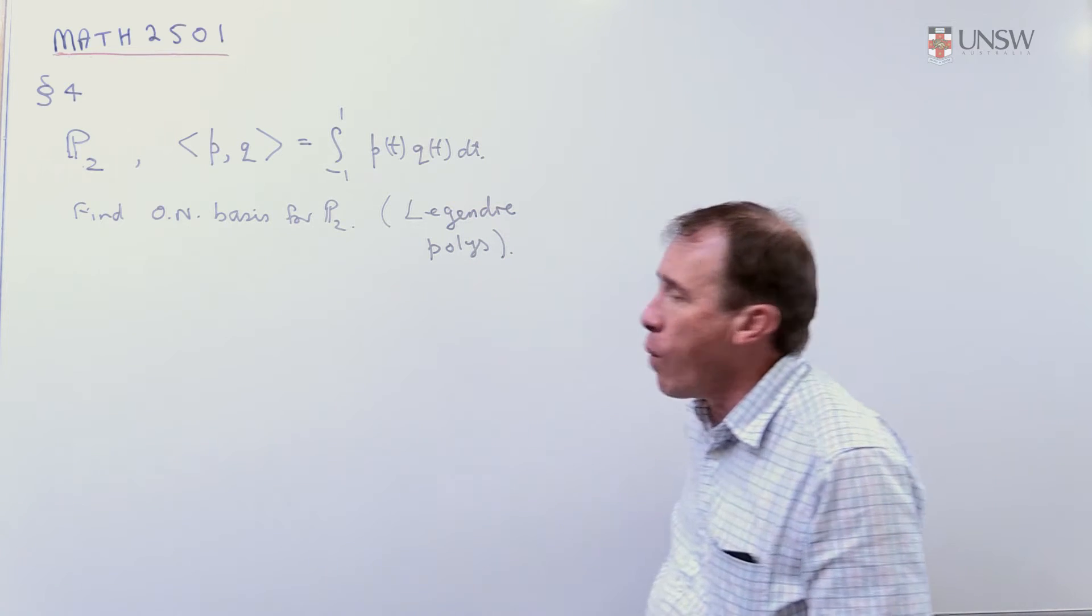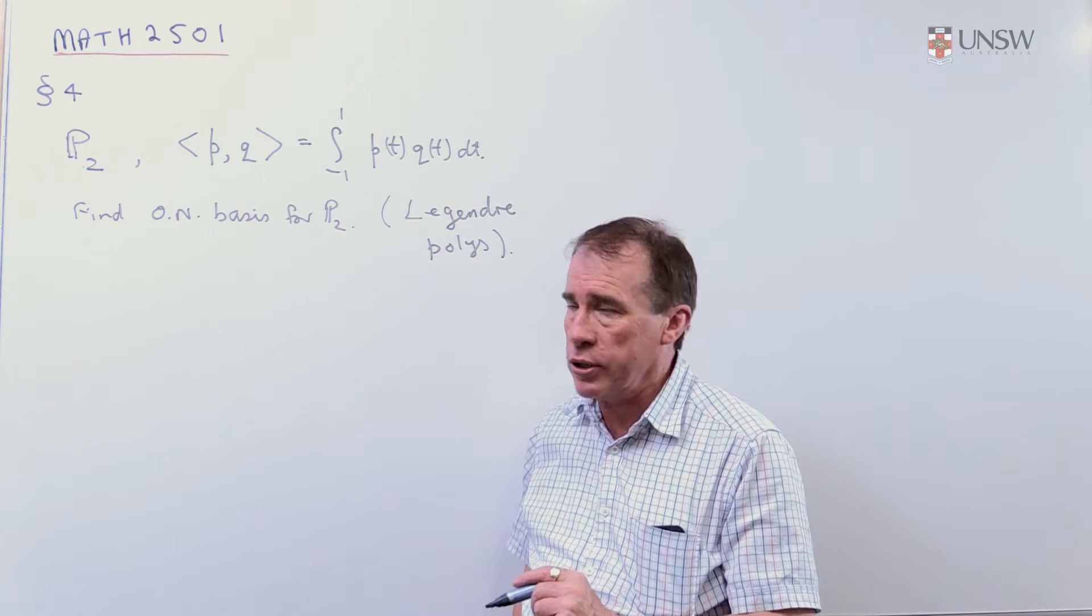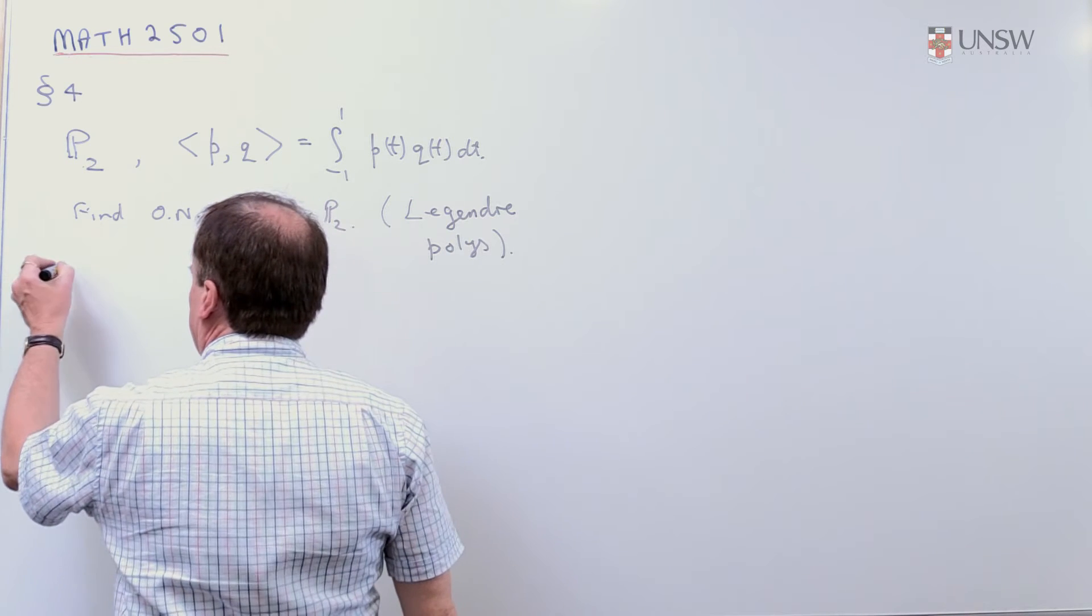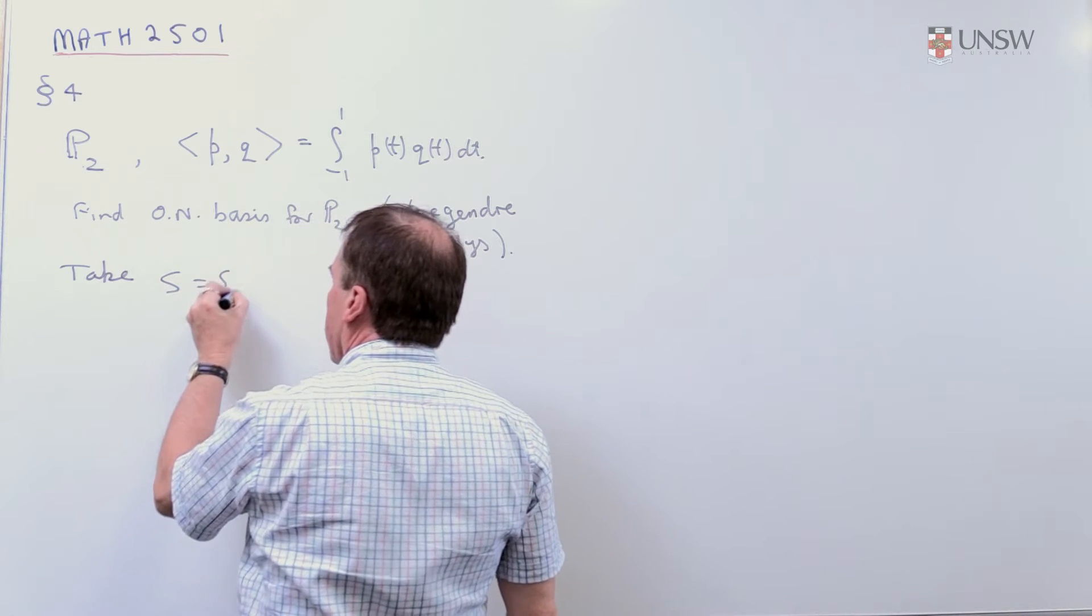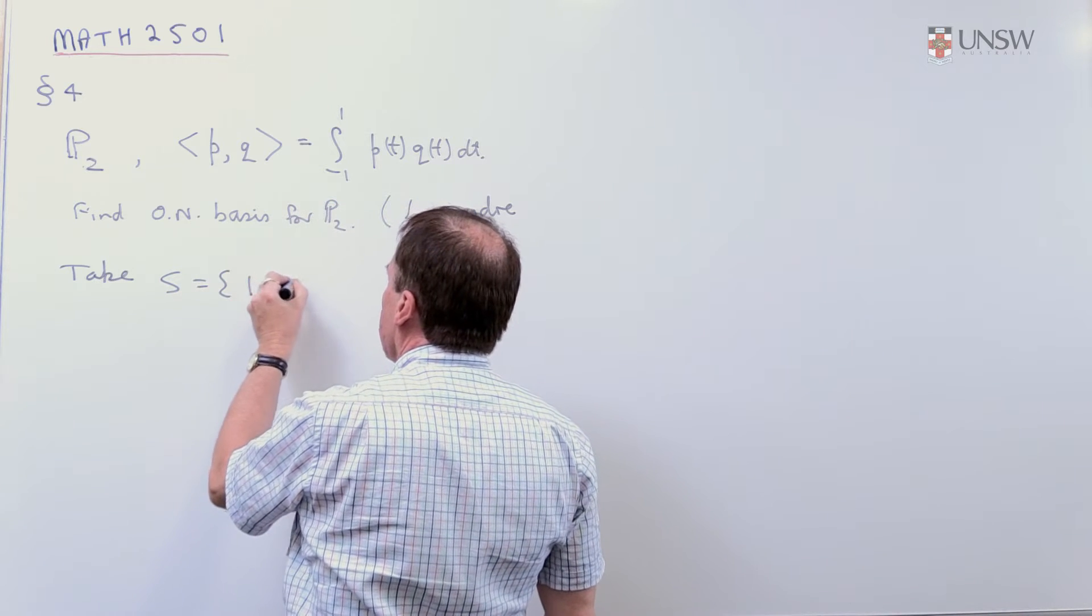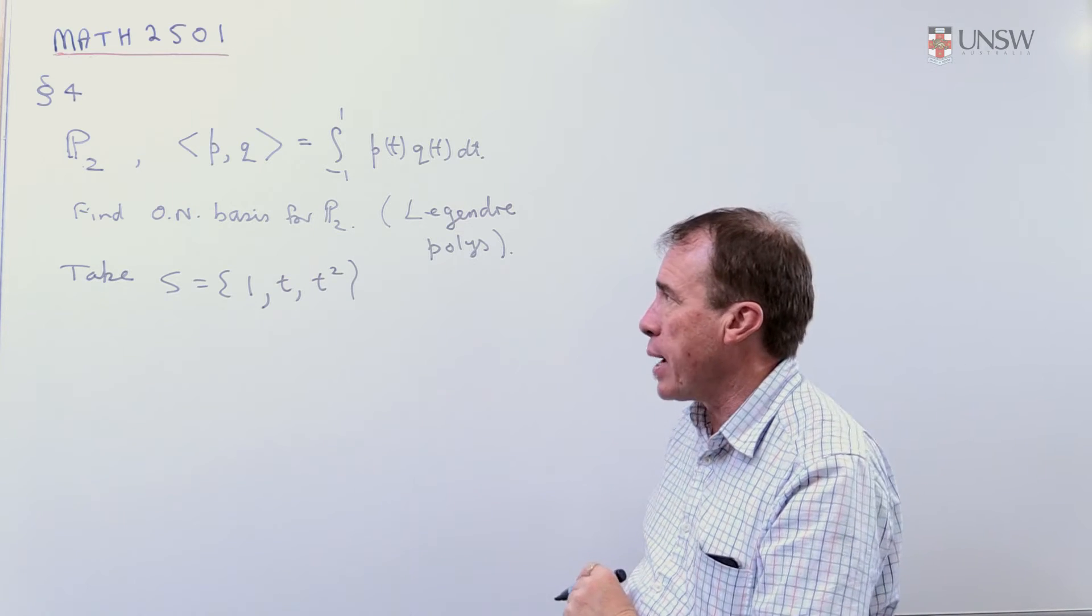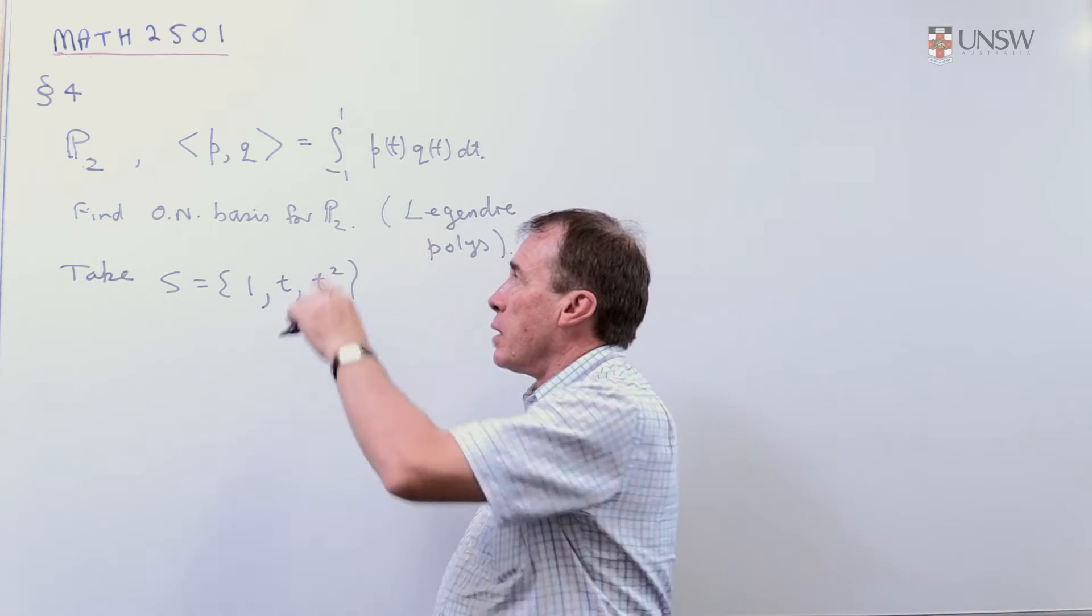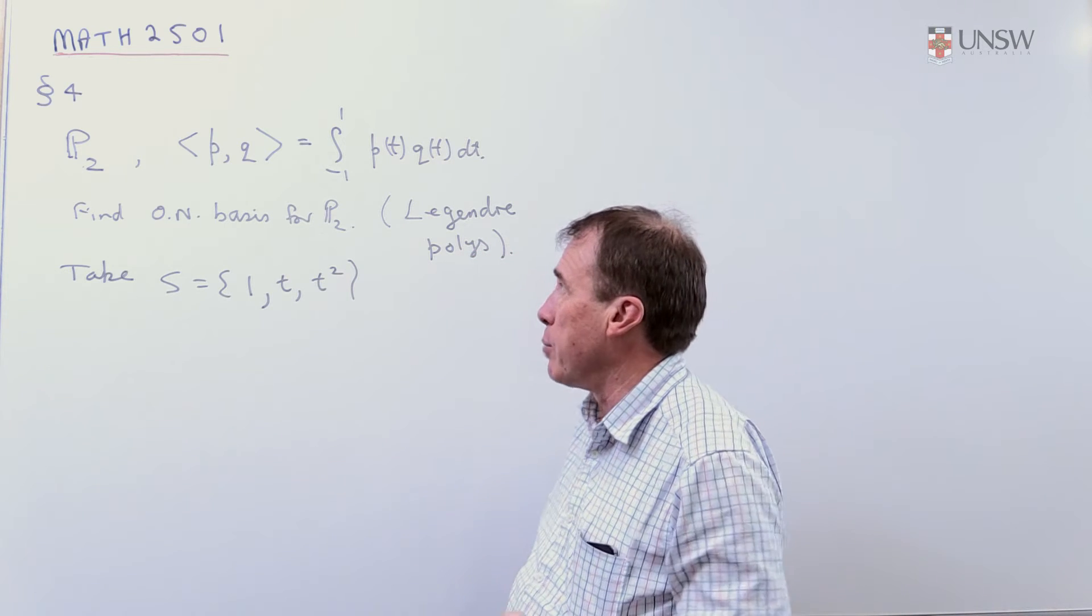Now, how do we build an orthonormal basis for this? Well, we start off with our standard basis, which is not orthonormal. So we take our standard basis, which is 1, t, and t squared. And we're going to apply the Gram-Schmidt algorithm, in this case, with this inner product. So we're going to remember what that means then.